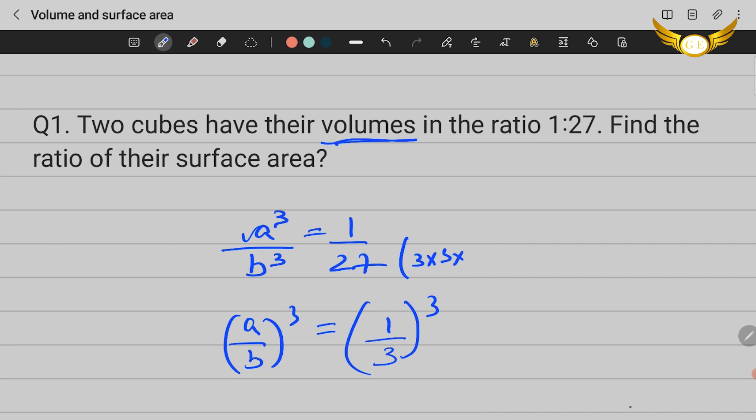You just take the cube root: (a/b)³ becomes (1/3)³, because 27 is 3×3×3. So this becomes (1/3)³. You solve this further, just simplify it. It becomes a/b = 1/3.